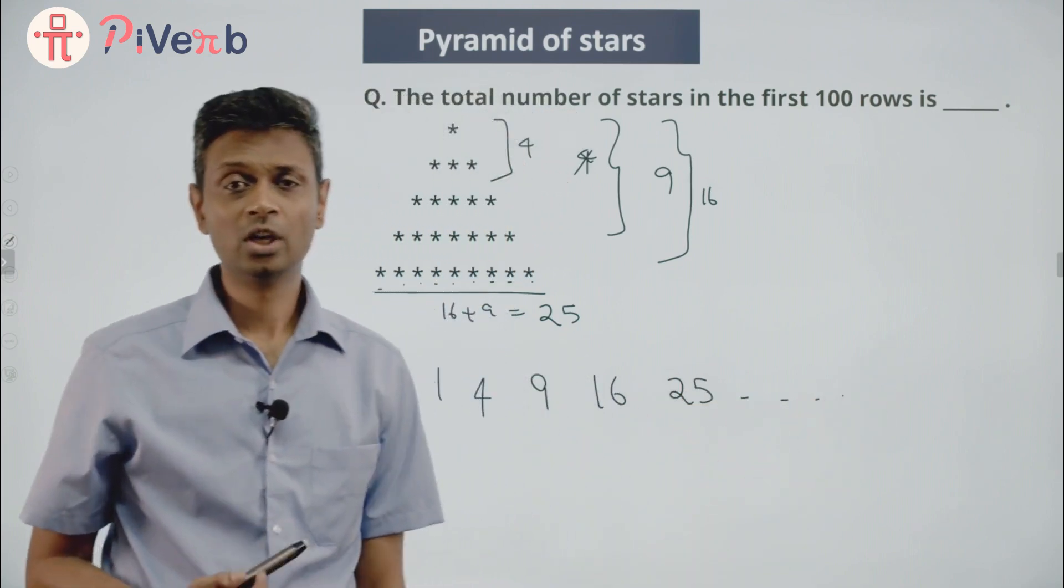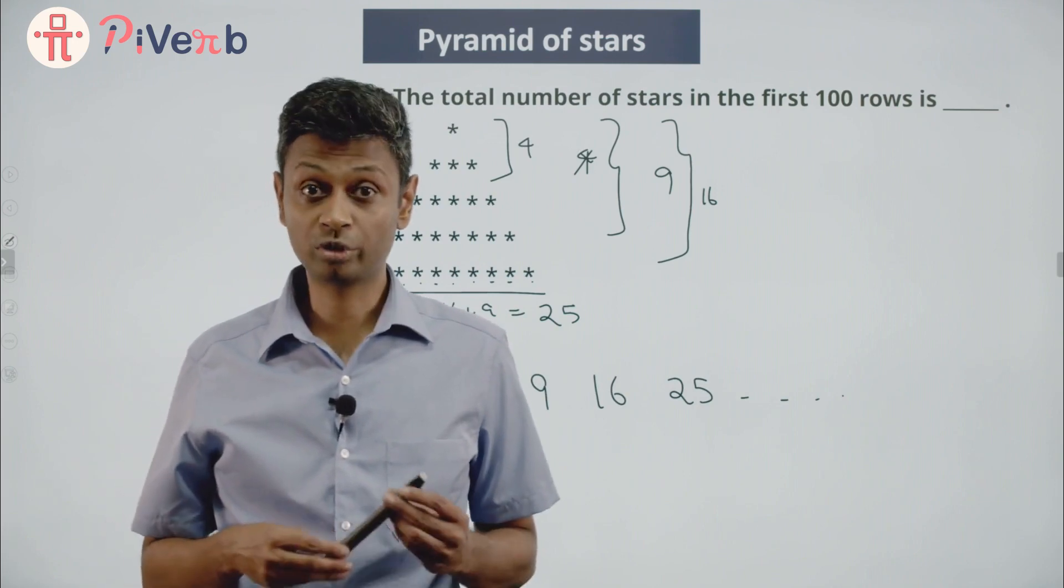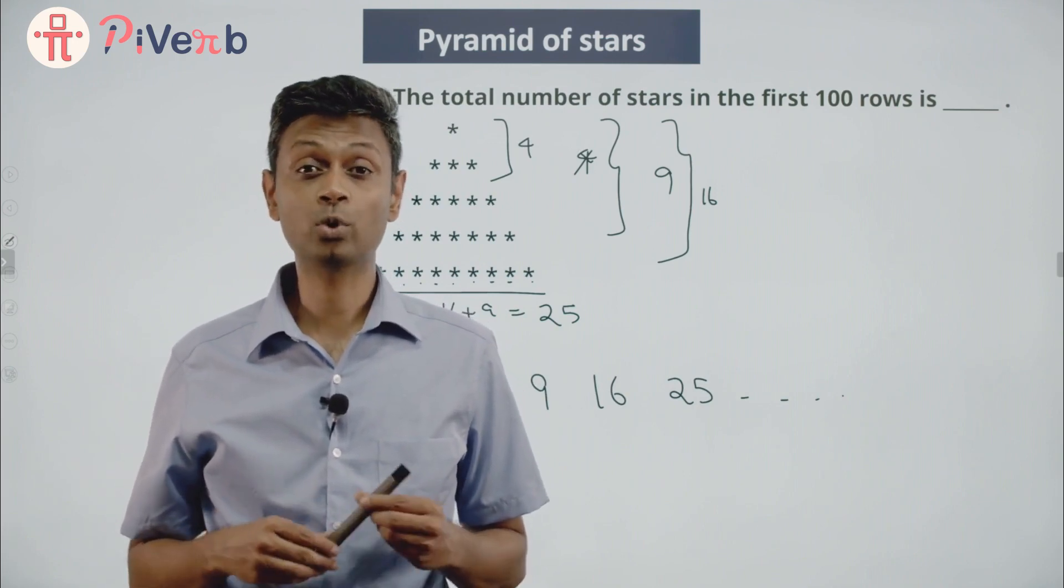The pattern to these numbers: up to 1 row is 1 square, up to 2 rows is 2 square, up to 3 rows is 3 square, up to 4 rows is 4 square.